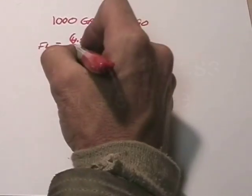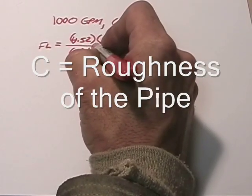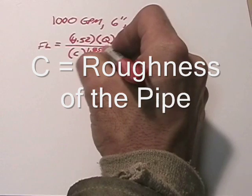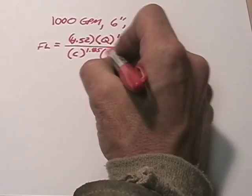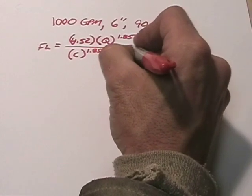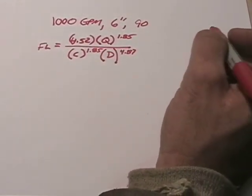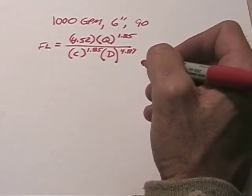Under that is the C factor, which is also raised to the power of 1.85. And then we multiply that times the diameter of the pipe in inches, raised to the power of 4.87. So obviously the scientific calculator is the only way to do it.